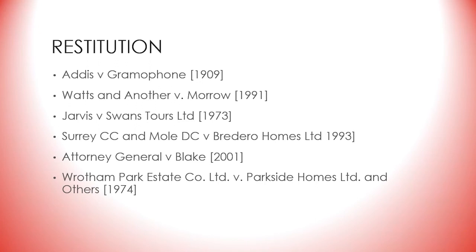A difference between restitution and the other two measures — expectation loss and reliance loss — arises in the case of total failure of consideration. This can be a more complete measure of compensation because it allows total recovery of the benefit passed to the defendant; the claimant gets back the value of his performance regardless of whether that is the whole loss. It usually applies to payments of money for nothing in return. There are also cases when the breach results in loss not measurable under the two principles of diminution in value and the cost of cure, or where the loss is not adequately represented by one of those two measures because something more is being lost.